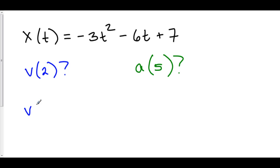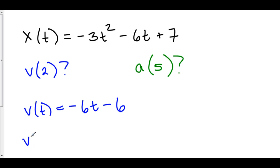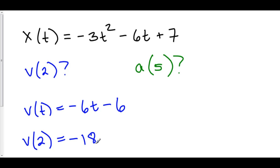Velocity is the derivative of position since it's one step down the ladder. The derivative of negative 3t squared is negative 6t. The derivative of negative 6t is negative 6. The derivative of 7 is just 0. So the velocity at time t equals 2: we just plug 2 in. Negative 6 times 2 is negative 12, minus 6 is negative 18. We don't have units here, but if our position was in meters over seconds, this would be meters per second. If we were in miles over hours, this would be miles per hour.